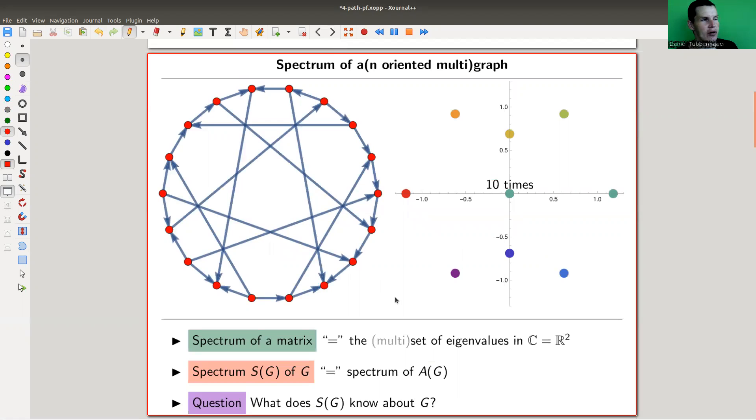So here's the point. I have a graph and we know that it has an associated adjacency matrix A(G). And what can you do with the matrix? You can calculate its eigenvalues.